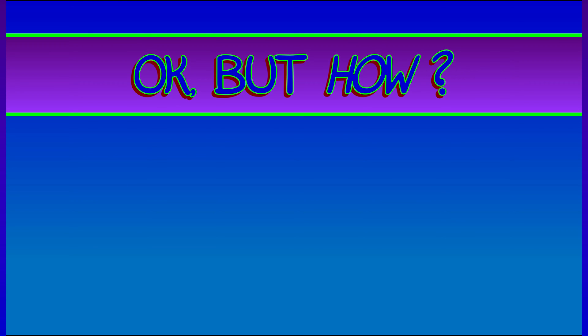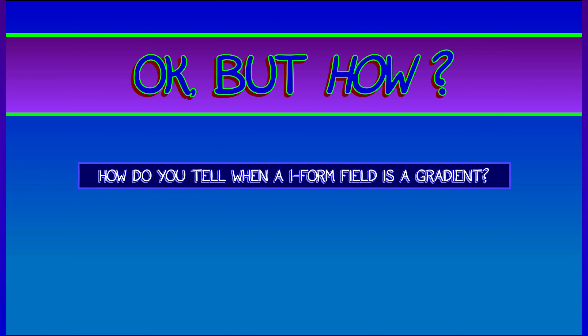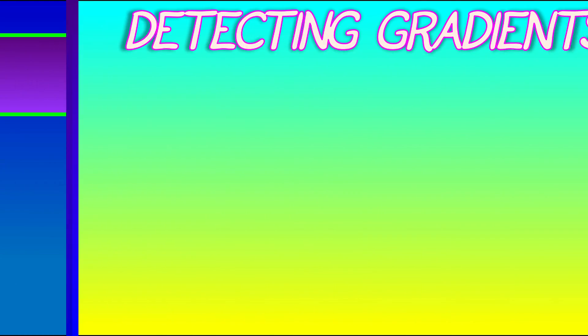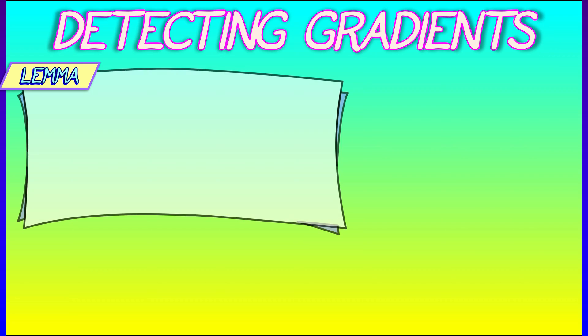All right, so we've got the independence of path theorem, and it's great, but how do we use it? How do we know when a one-form field is a gradient, or equivalently, how do we know when a vector field is a gradient? Well, it's not obvious, but there is a very effective criterion for checking for gradients in the form of the following lemma.